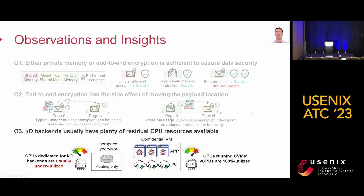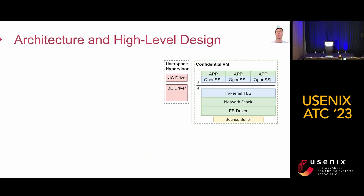Third, IO backends usually have plenty of residual CPU resources available. CPUs running CVMs are usually fully utilized due to complex application logic and IO processing. In contrast, CPUs dedicated for IO backends are usually underutilized because they focus on simple logic such as routing. Based on these observations, we propose the architecture and halo design for BFrost.